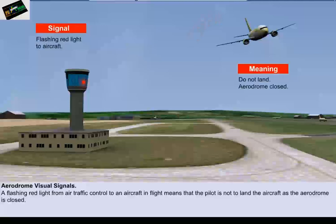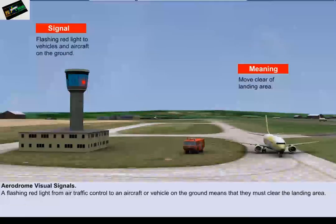A flashing red light from air traffic control to an aircraft in flight means that the pilot is not to land the aircraft as the aerodrome is closed. A flashing red light from air traffic control to an aircraft or vehicle on the ground means that they must clear the landing area.